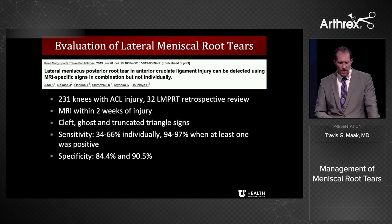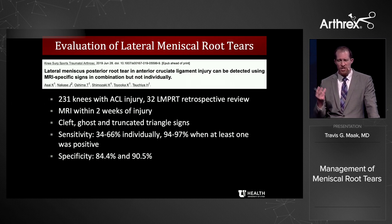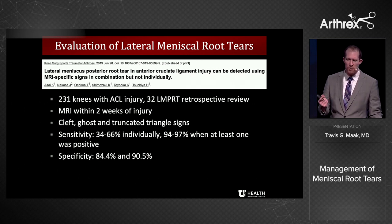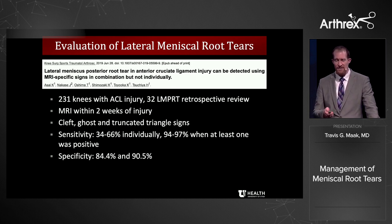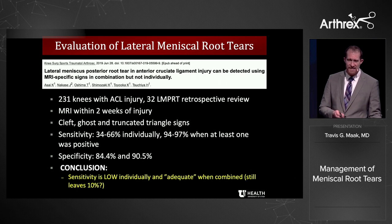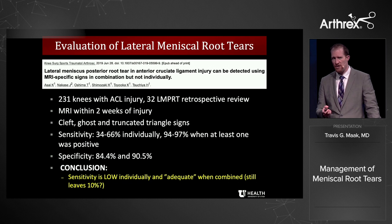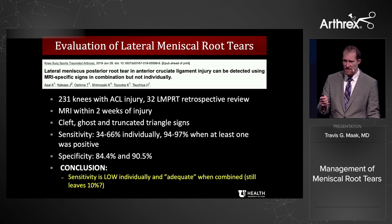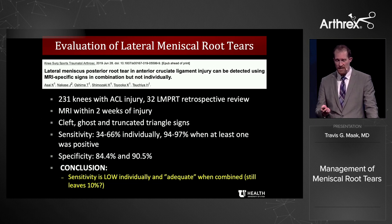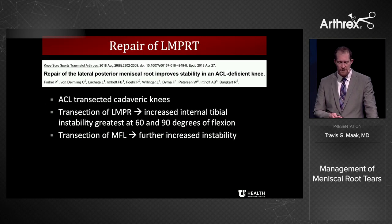What about the lateral meniscus root? Evaluation of lateral meniscus root tear shows similar issues. Evaluation using three different signs — the cleft, the ghost, and the truncated triangle sign — when used simultaneously allows very high specificity and sensitivity. That said, it still leaves 10% completely missed, and if you don't have a good radiologist or aren't meticulous in your MRI evaluation and arthroscopy, you can miss these.